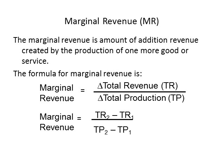The marginal revenue is the amount of additional revenue generated by the production of an additional unit of output. There are two formulas associated with marginal revenue. The first formula is more conceptual, telling us what the term means: the change in total revenue divided by the change in total production. The delta symbol represents the word 'change.' The second formula is more useful for calculating an estimate of the marginal revenue of a firm.